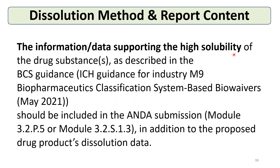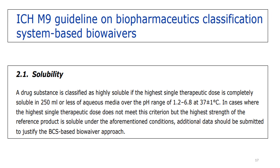Information and data supporting the high solubility of the drug substance, as described in the BCS guidance ICH M9 — the guideline on biopharmaceutical classification system-based biowaivers — should be included in the ANDA submission under Module 3.2.S.1.1.3, in addition to the proposed drug product dissolution data. The ICH M9 solubility criterion states that if the highest therapeutic dose of the drug is soluble in 250 ml or less of aqueous media over a pH range of 1.2 to 6.8, it meets the BCS high solubility criteria.